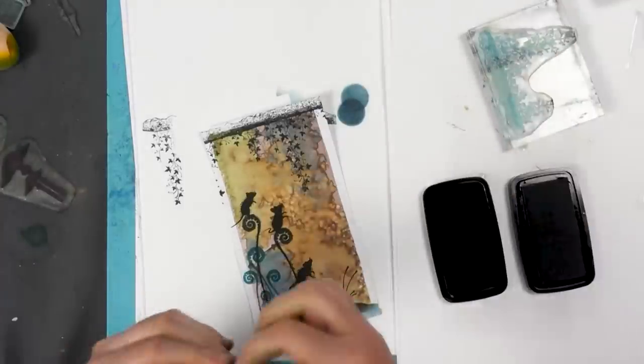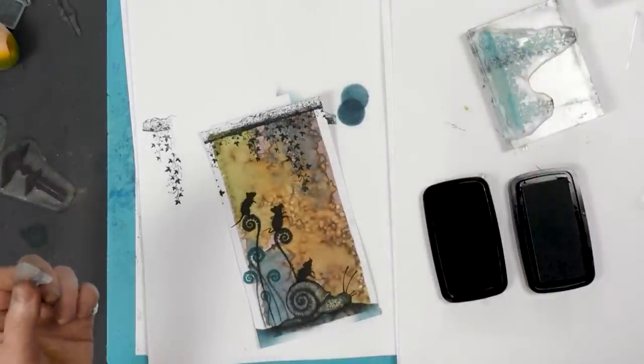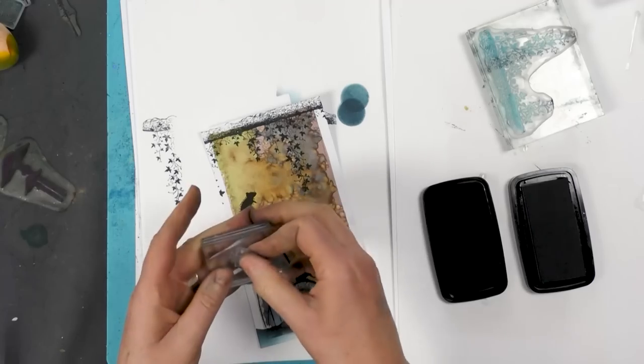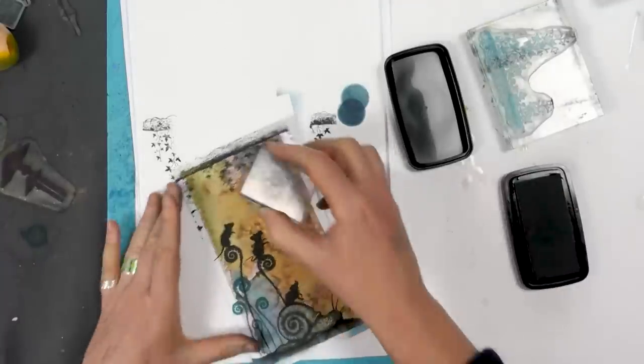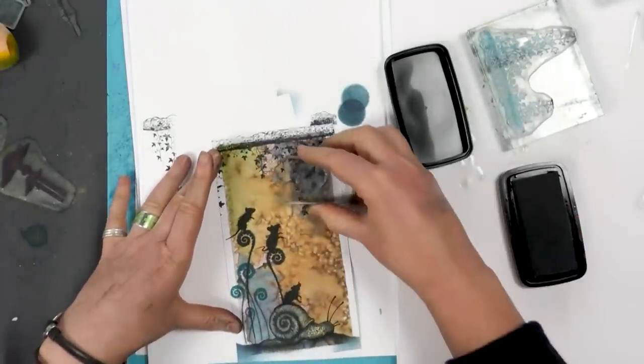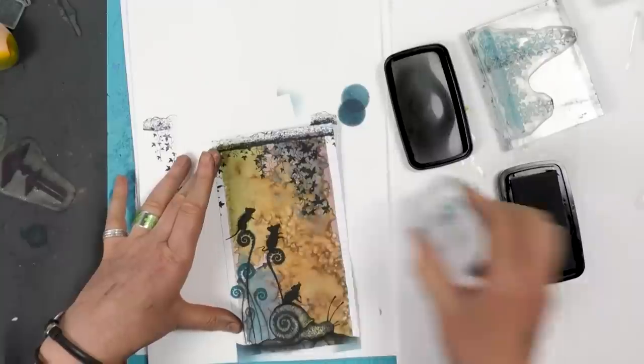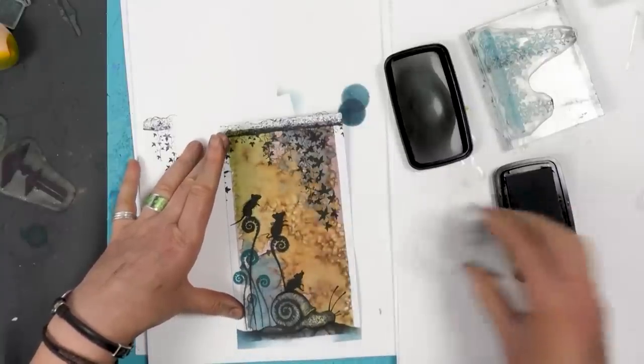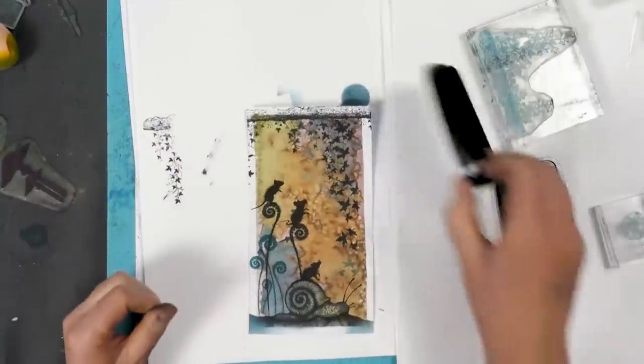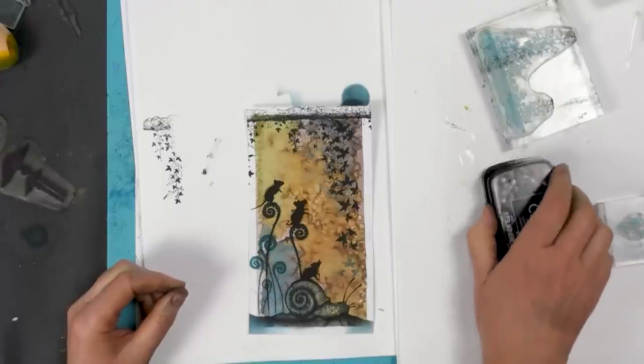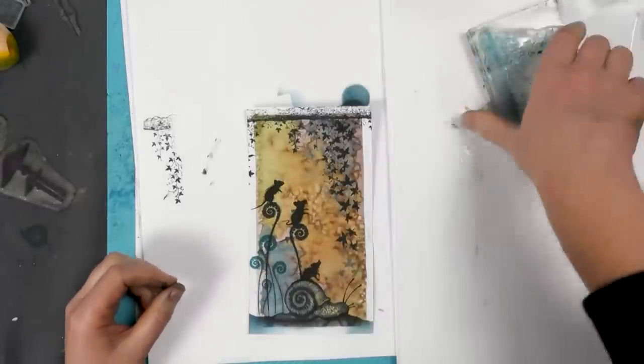And then our lovely little stamp that comes with the set, I'm going to ink that up. I'll just add a few more leaves that are on their way down, like so.